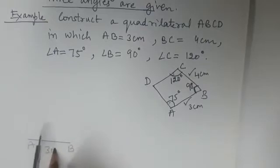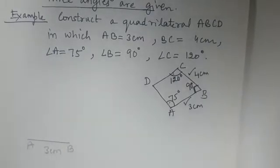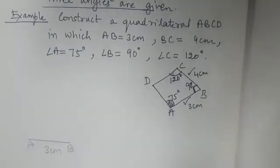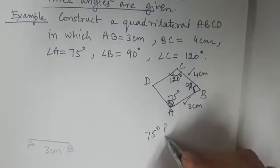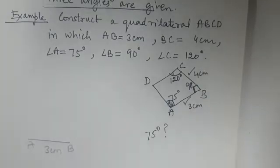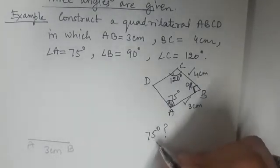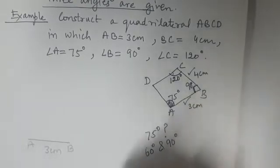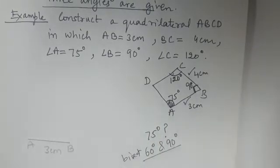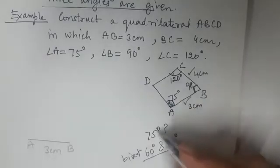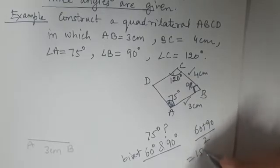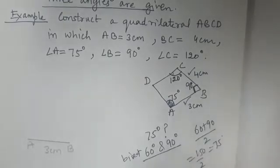Now, at A we need to construct an angle of 75 degrees. How do we construct an angle of 75 degrees? We get the bisector of 60 degrees and 90 degrees. When we bisect 60 and 90, we get 75 degrees — because (60 + 90) / 2 = 150 / 2 = 75.